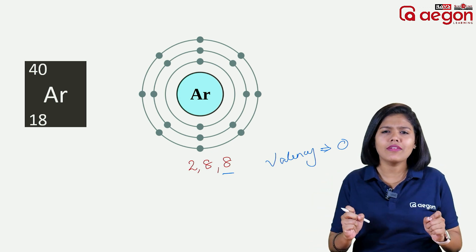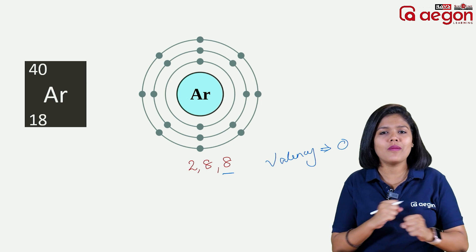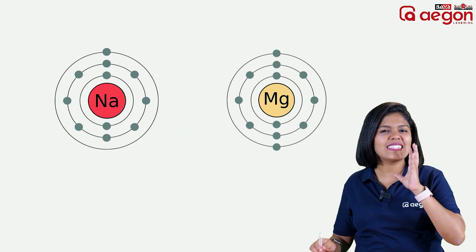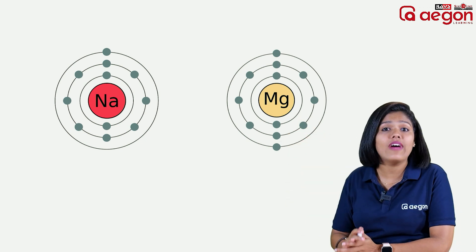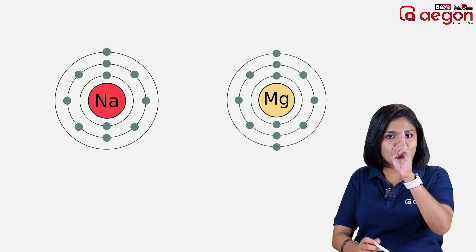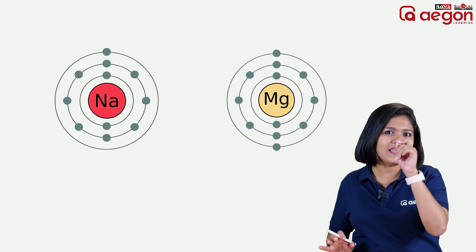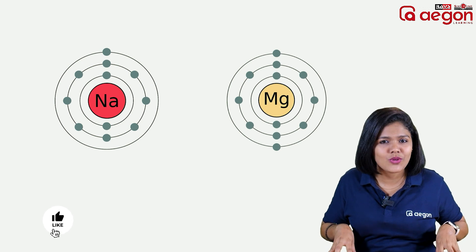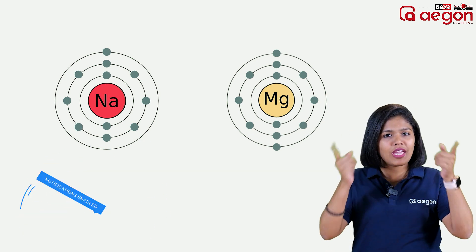This is the topic, my friends. Valency is a very important topic. If you work on this, chemistry will be easy to learn. If you are not confused, you will get the correct answer. Please write in the comment box: Na, Sodium — Mg, Magnesium. Try to find their valency. Shri Lakshmi, thank you. Bye.